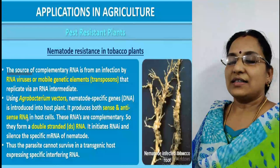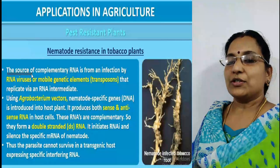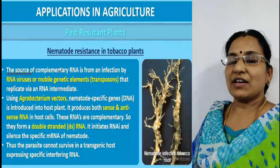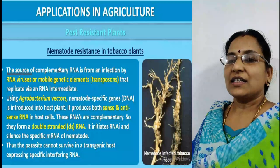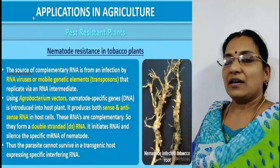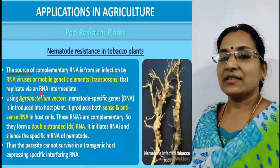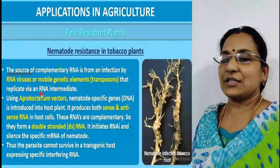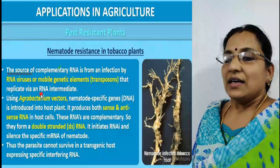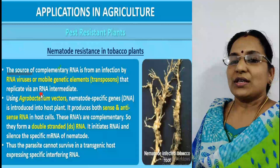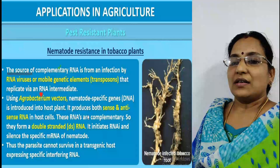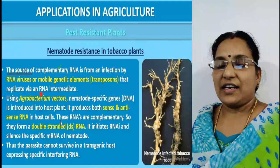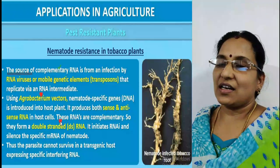In summary, for the RNA interference process: the desired DNA is necessary - one that can kill the nematode. A vector is required, which is the agrobacterium vector. The gene is isolated from an RNA virus or from transposons. These RNAs are complementary, so they form a double-stranded RNA, which initiates RNA interference and silences the specific messenger RNA of the nematode.